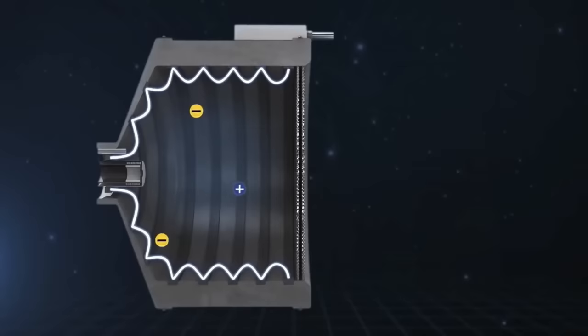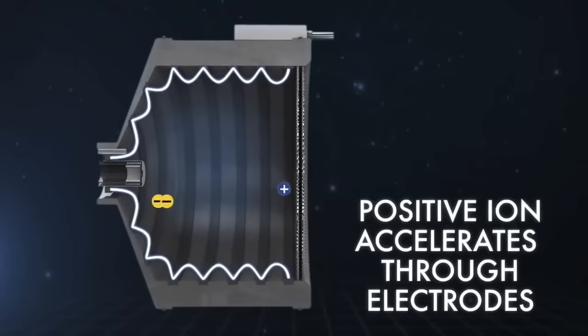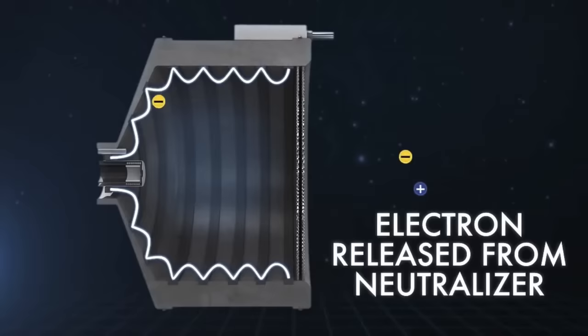These ions will then drift towards the first of your grids. The first grid is a screening grid that's positively charged. The exterior one is negatively charged. So the positively charged ions flow through this, and as soon as they go through, there's a big electric field here. They accelerate through and shoot off into space. And then you have another electron gun spraying electrons after them so that the exhaust gets neutralized.